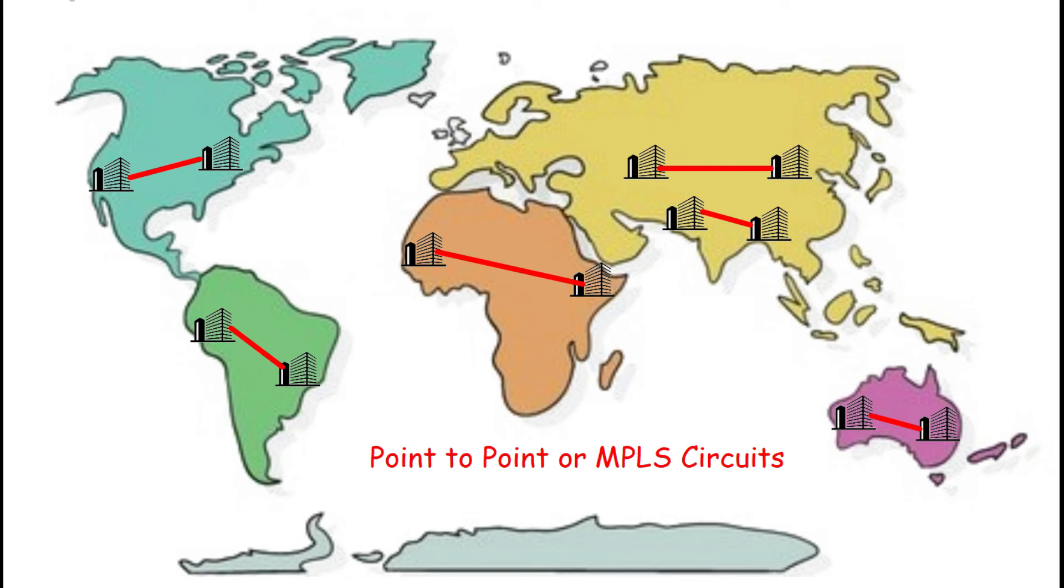Another advantage of having computer networking is we can expand our offices in different geolocations. For example, we have offices in different cities or different states. Then we can use dedicated circuits like point-to-point circuits or MPLS circuits. By using these circuit connectivities, these offices in different cities or different states connect with each other and they act as a local area network.